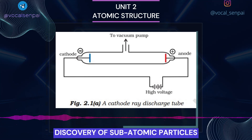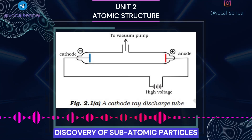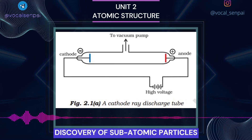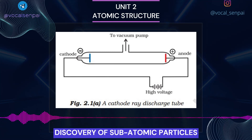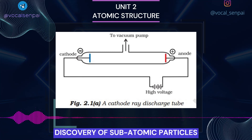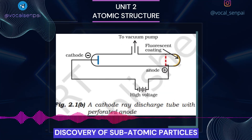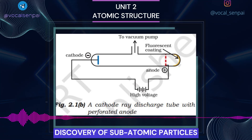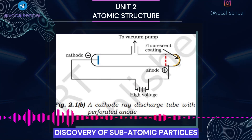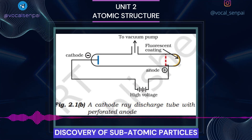A cathode ray tube is made of glass containing two thin pieces of metal, called electrodes, sealed in it. The electrical discharge through the gases could be observed only at very low pressures and at very high voltages. The pressure of different gases could be adjusted by evacuation of the glass tubes. When sufficiently high voltage is applied across the electrodes, current starts flowing through a stream of particles moving in the tube from the negative electrode (cathode) to the positive electrode (anode). These were called cathode rays or cathode ray particles.